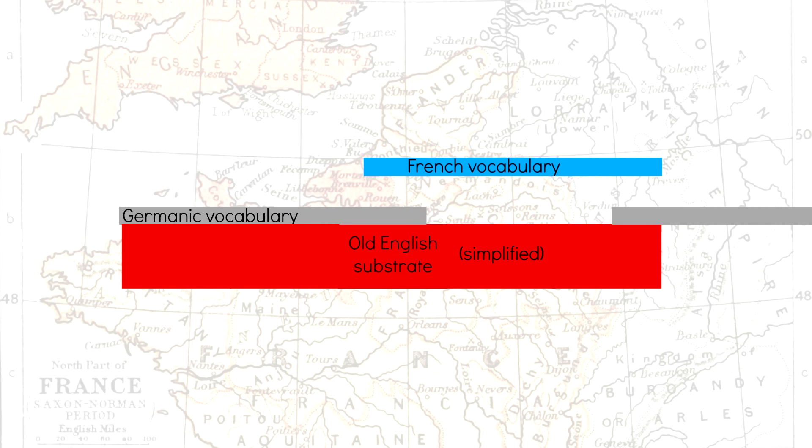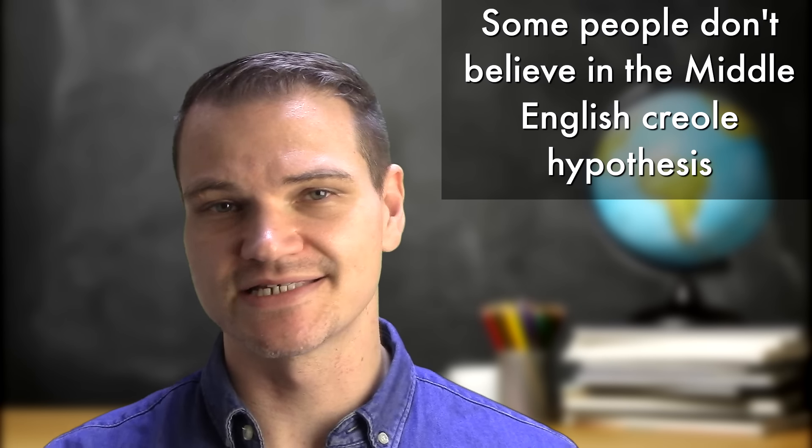So it's very possible that Old English underwent a process of Creolization, inserting lots of French vocabulary into an Old English substrate, or underlying structure. But there might have been a different reason for that simplification of English.